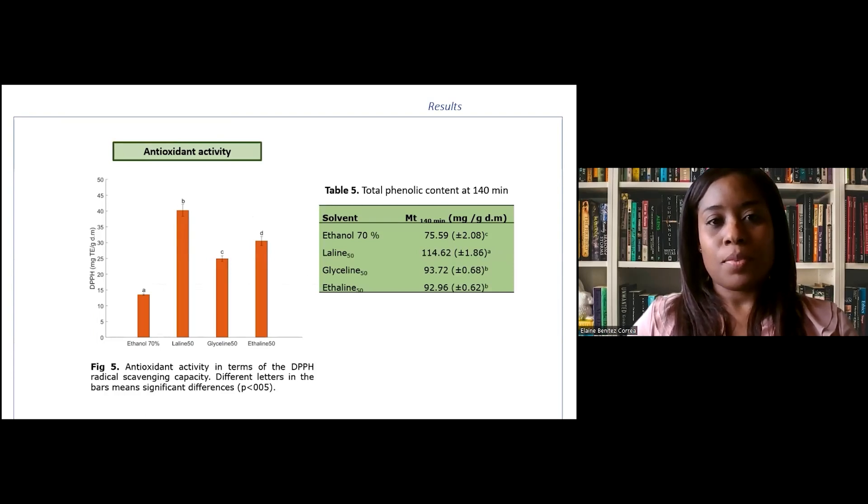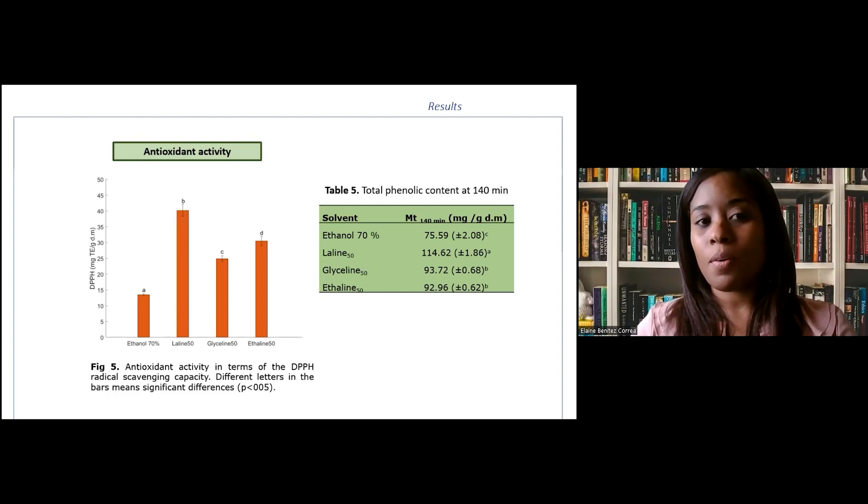The antioxidant activity of cocoa bean shell extract changes significantly with the different solvents used and is markedly higher with deep eutectic solvent extracts compared to control samples. Laline containing 50% water presents the highest free radical scavenging capacity. Contrary to expectations, the capacity of extract obtained by glyceline and ethylene containing 50% water is not influenced by total phenolic content, since both solvents show the same performance in total phenolic content extraction. However, the bar graph shows a significant difference between the antioxidant capacity of both solvents.